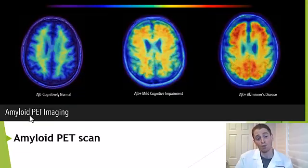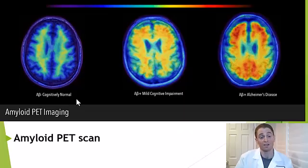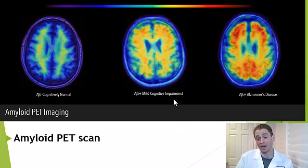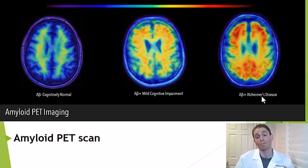This is amyloid PET imaging, where a specific tracer is given that binds to amyloid plaques. On the left is a cognitively normal person with very low levels of amyloid in the brain. In the middle is someone with mild cognitive impairment due to Alzheimer's pathology with some amyloid plaque. And on the right is someone with Alzheimer's disease who more avidly takes up the tracer.